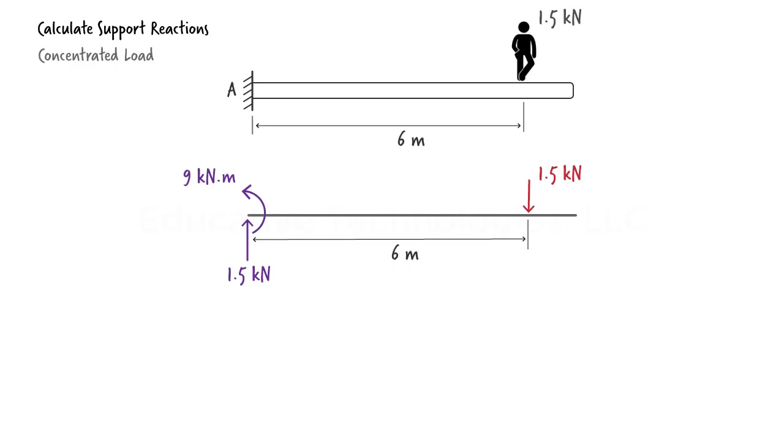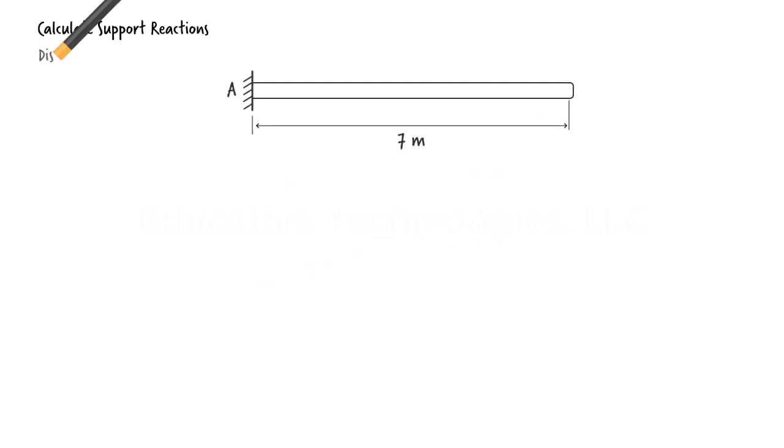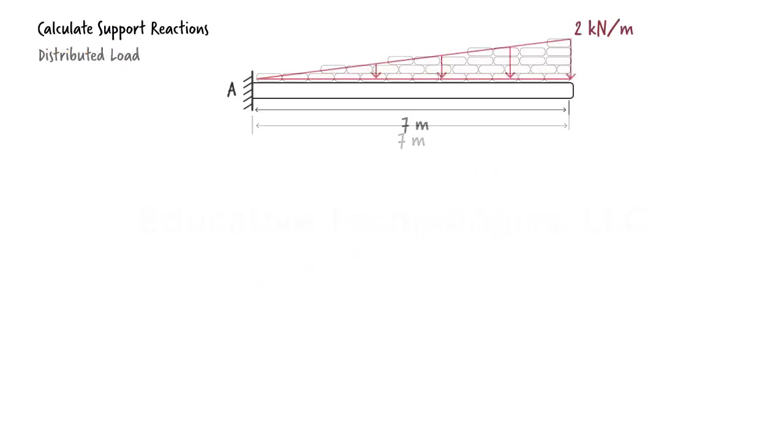Now, consider the case that the cantilever beam is holding a bunch of sandbags, the shape of which can be viewed as a triangle. Suppose we have measured the intensity of the triangular distributed load to be 2 kN per meter. We wish to calculate the support reactions for the beam.